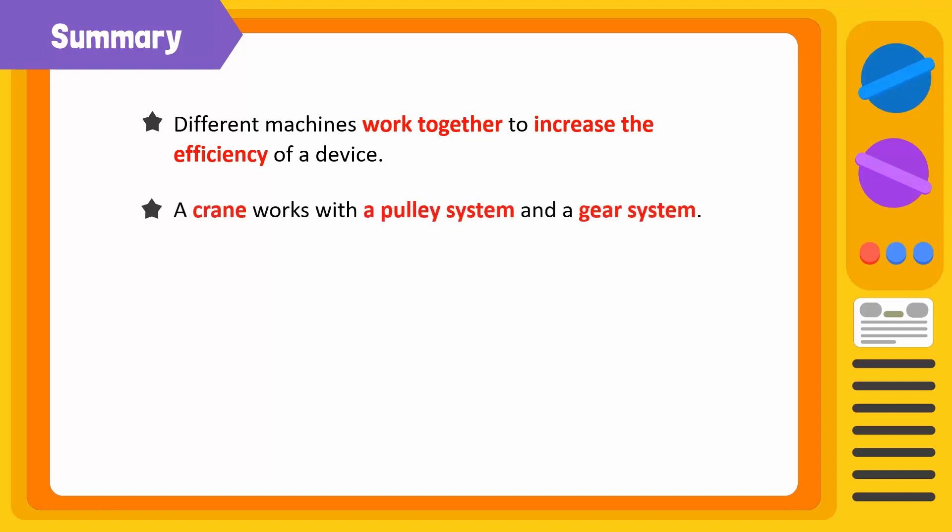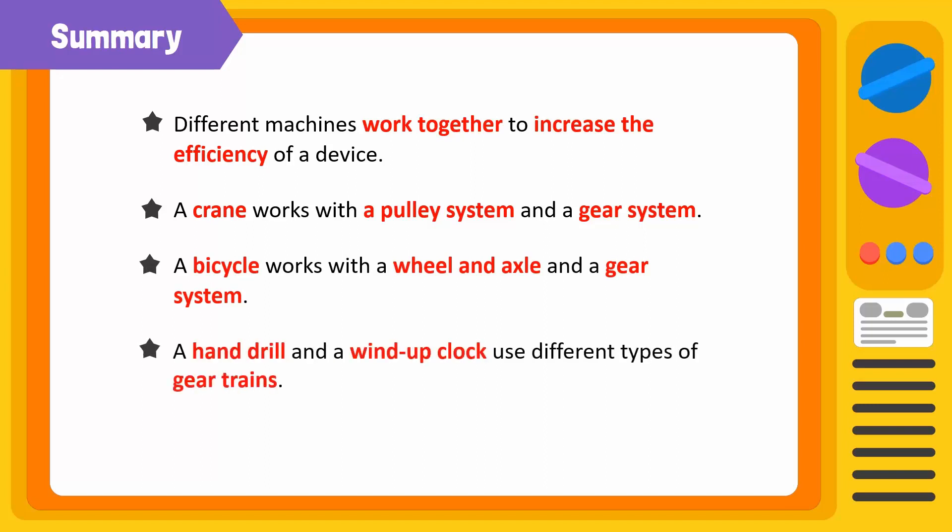Let's summarize. Different machines work together to increase the efficiency of a device. For example, a crane works with a pulley system and a gear system. A bicycle works with a wheel and axle and a gear system. A hand drill and a wind-up clock are good applications of gear systems.